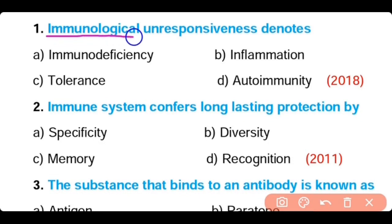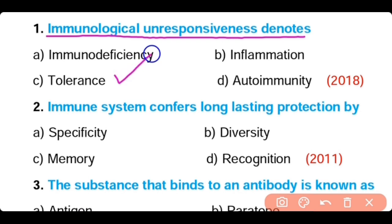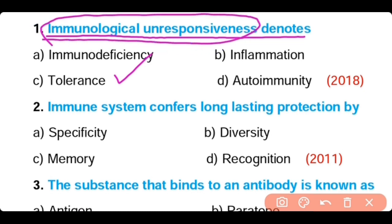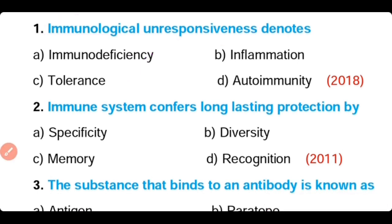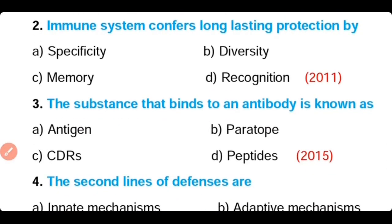Question number 1. The immunological unresponsiveness denotes: immunodeficiency, inflammation, tolerance, or autoimmunity. The correct answer is Option C. Immunological unresponsiveness to any substance is known as immunological tolerance.